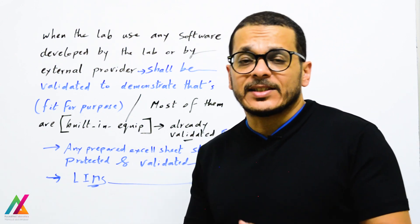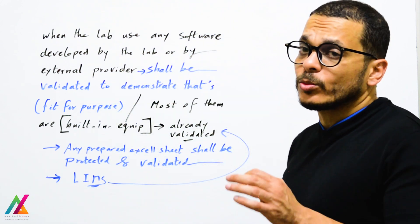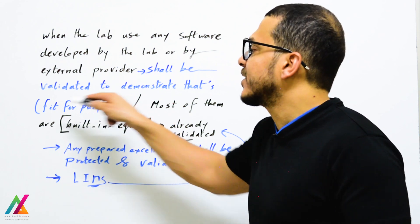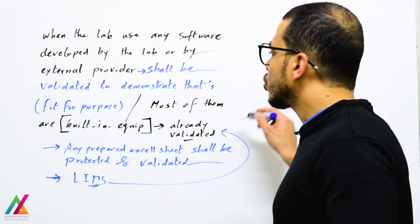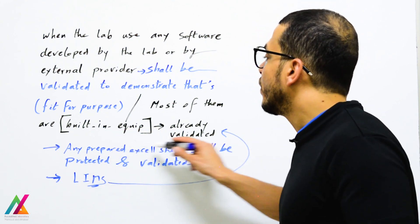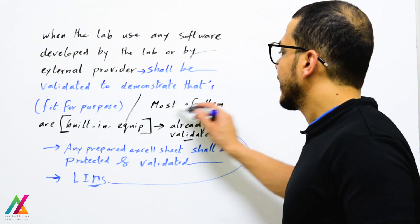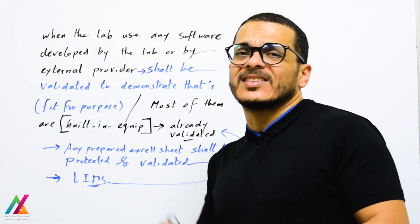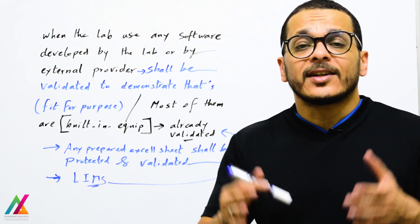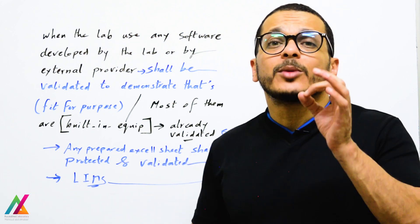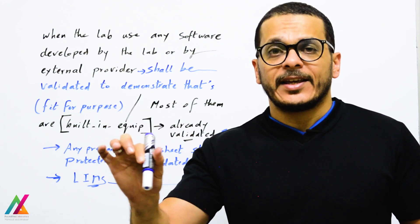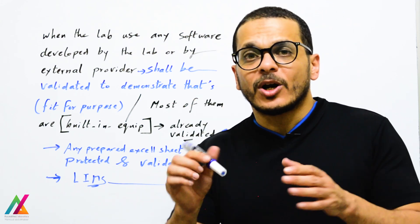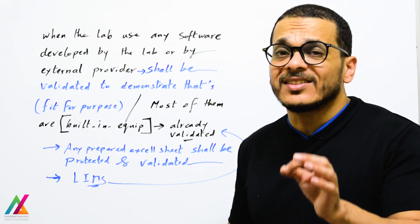All equipment inside the lab shall be labeled to prevent misuse, based on the risk-based approach. Software is now considered equipment and shall be validated like any other equipment. When the lab uses software developed internally or by an external provider, it shall be validated to demonstrate it is fit for purpose. Most software inside the lab is built into the instrument and already validated by the provider. Any prepared Excel sheet shall be protected by password — if an assessor clicks on a cell during an audit, they should not be able to modify it. All Excel sheets shall be protected and validated.